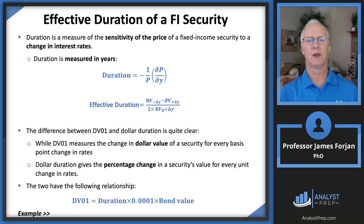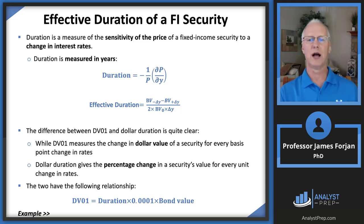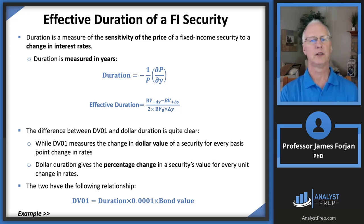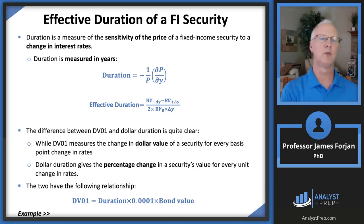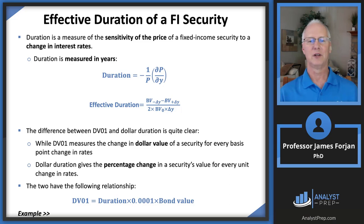That's what effective duration looks like. The relationship between DV01 and duration is: DV01 equals the duration of the bond times 0.0001 times the bond value. Let's work through an example of hedging using duration.